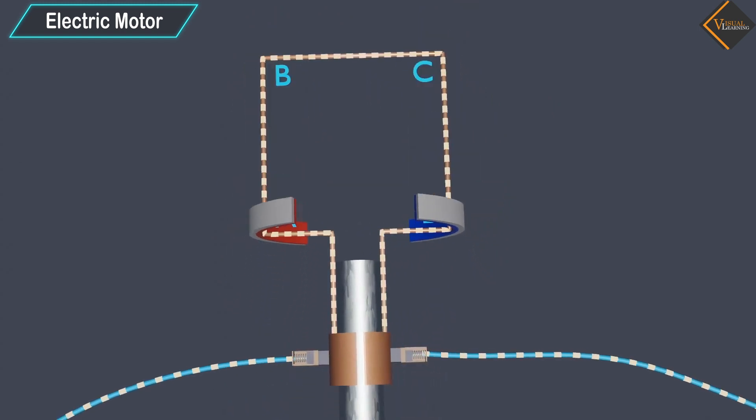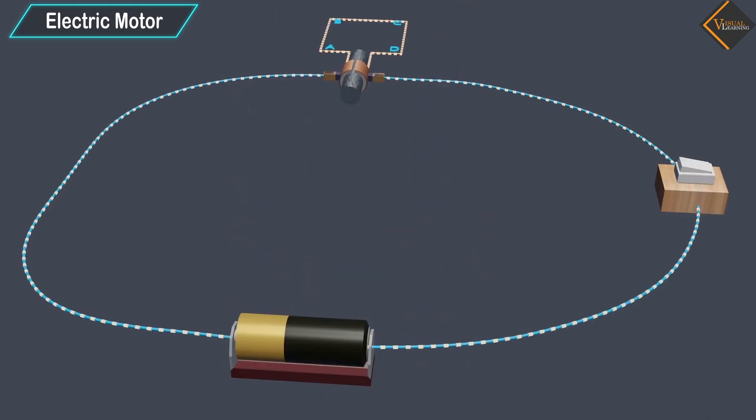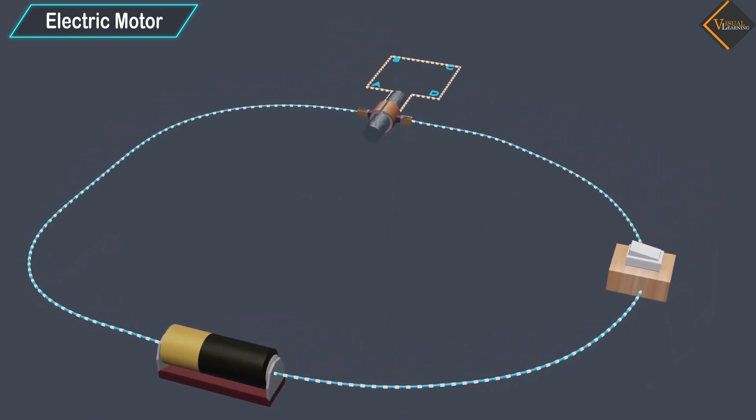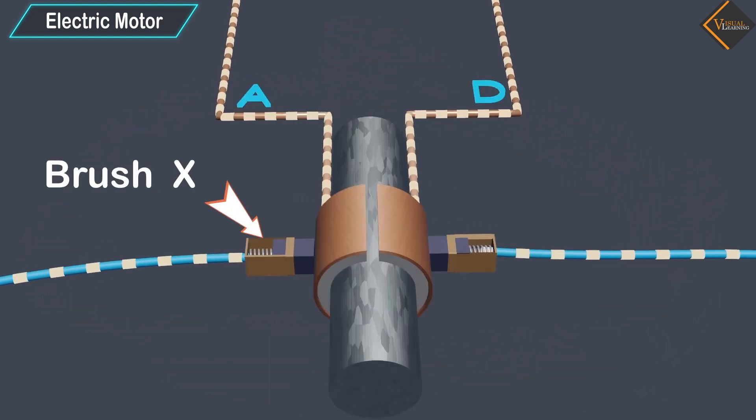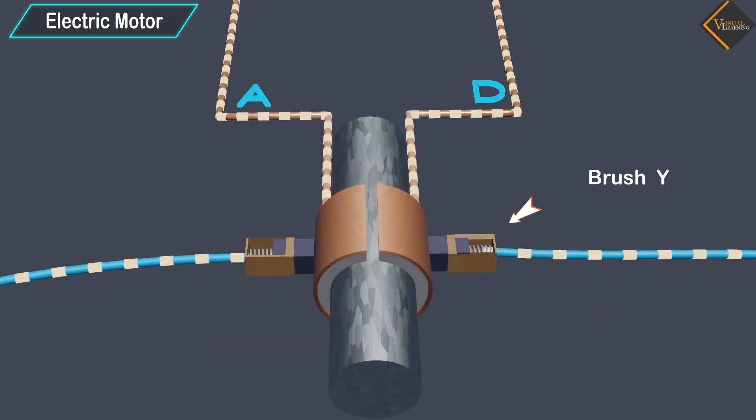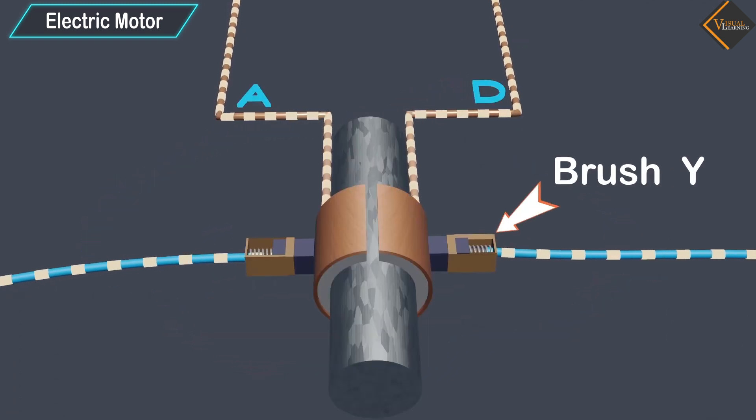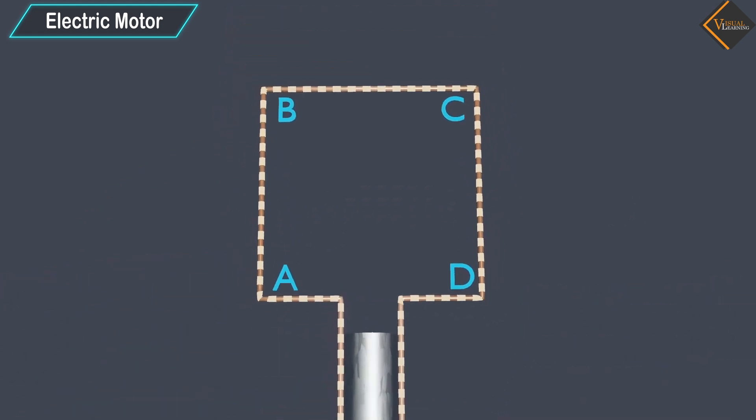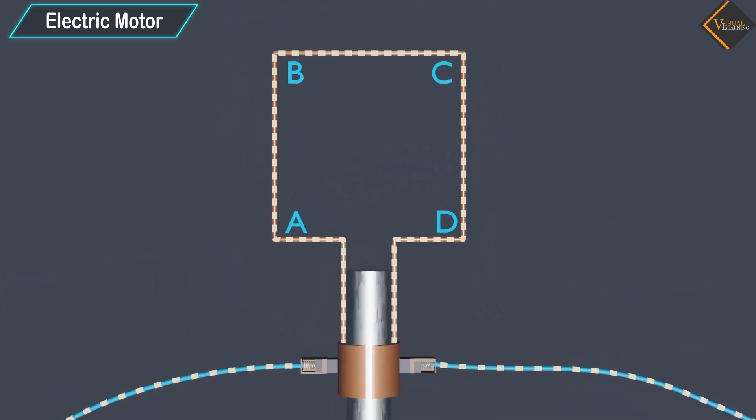Current in the coil ABCD enters from the source battery through conducting brush X and flows back to the battery through brush Y. Notice that the current in arm AB of the coil flows from A to B. In arm CD, it flows from C to D, that is, opposite to the direction of current through arm AB.